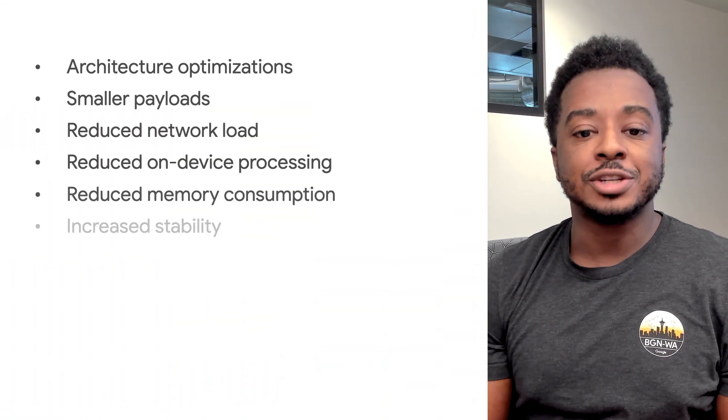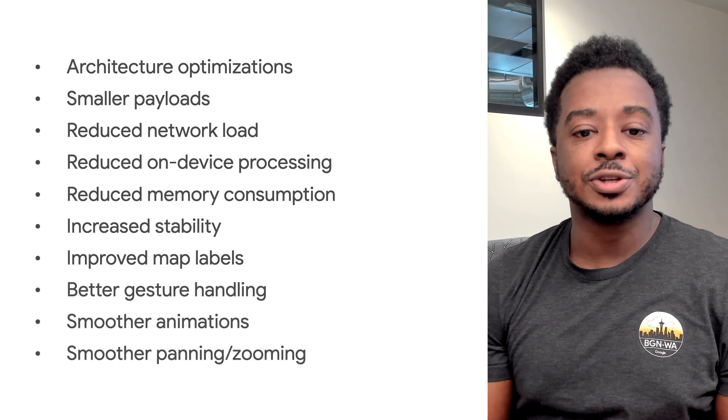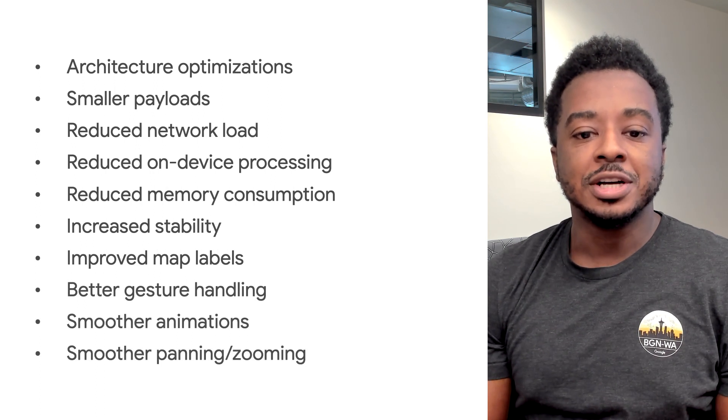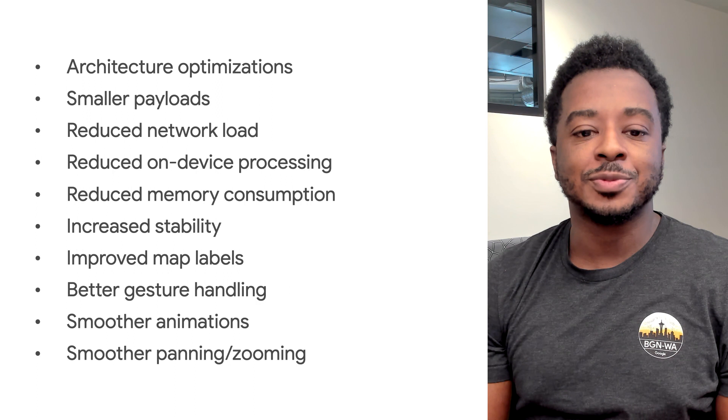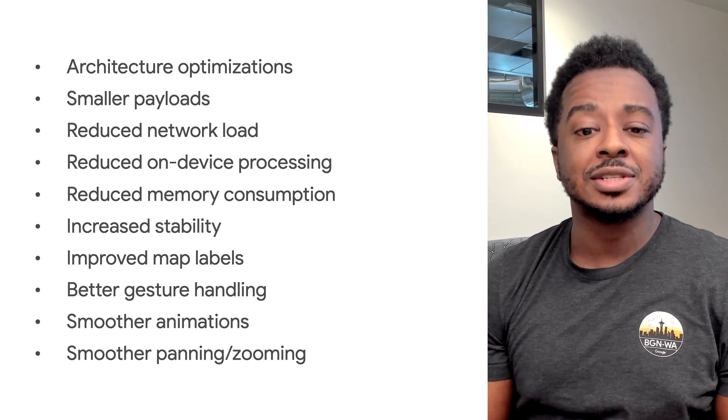On Android, this is made possible thanks to a years-long engineering effort to bring the same underlying map renderer that over a billion people rely on every day in the Google Maps app to the Maps SDK for Android. This opens up a wide variety of possibilities for us to deliver new features to your mobile apps. The new map renderer introduces optimizations to our tile serving and rendering architecture, achieving a reduced payload size from the server, resulting in faster on-device processing as well as lower memory consumption.